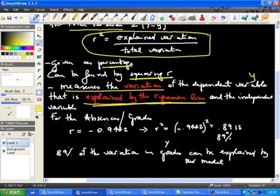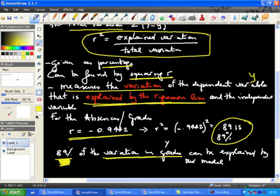if we compute it for the absences and grades, r was minus 0.9442, r squared is squaring the minus 0.9442, we'll get 0.8915 or 89%, which means that we have a pretty good model, because 89% of the variation in grades can be explained by our model. So our model seems to be quite reliable.